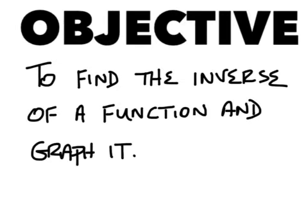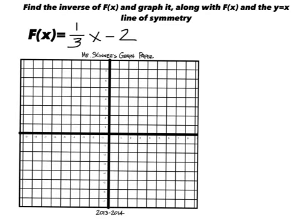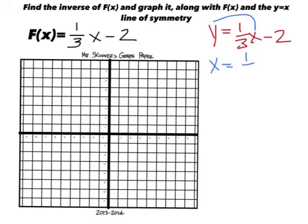To find the inverse of a function and graph it, here's an example: f(x) equals one-third x minus two. We need to change that over — start with y equals one-third x minus two, then swap x and y to get x equals one-third y minus two.